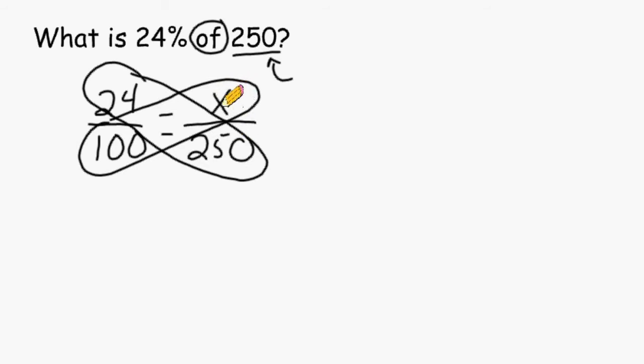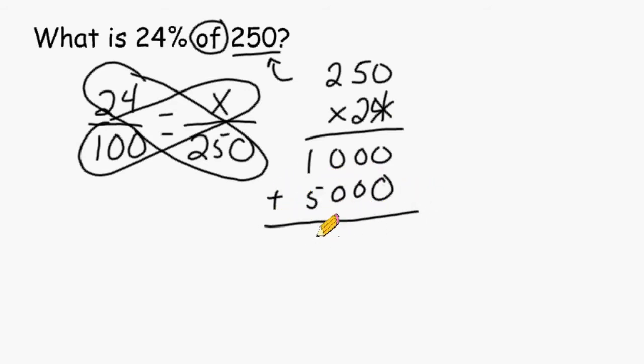24 times 250 will be equal to 100 times whatever the value of x is. So to figure out what x is, we can start by multiplying 250 by 24. Let's start with this 4 here and multiply it by 250. 4 times 250 is 1000. Then we multiply 2 times 250 at the top, which is 500. Now we just add 1000 and 5000, which is equivalent to 6000.